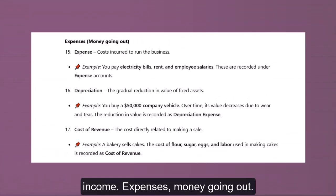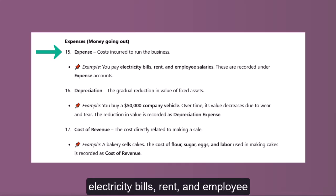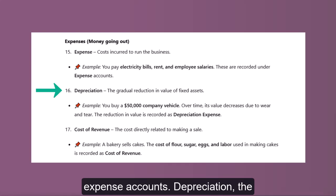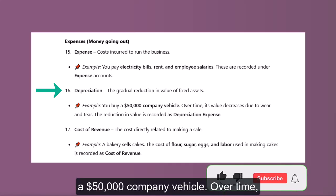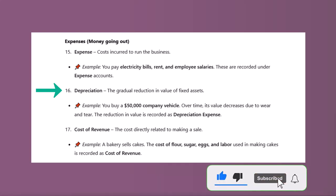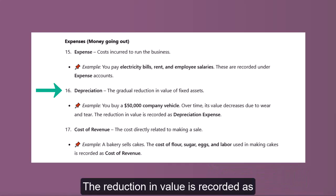Expenses — money going out. Expense: costs incurred to run the business. For example, you pay electricity bills, rent, and employee salaries — these are recorded under expense accounts. Depreciation: the gradual reduction in value of fixed assets. For example, you buy a $50,000 company vehicle. Over time, its value decreases due to wear and tear, and the reduction in value is recorded as depreciation expense.